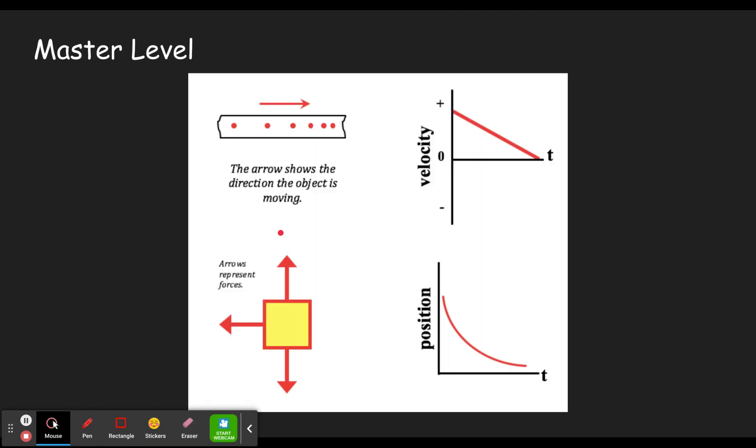So you see in the master level, now we've added in a dot diagram. Okay. So we've taken out the words and we've got a dot diagram. Master level is going to add one more thing. So we have the dot diagram there. So let's take a look at what we've got.